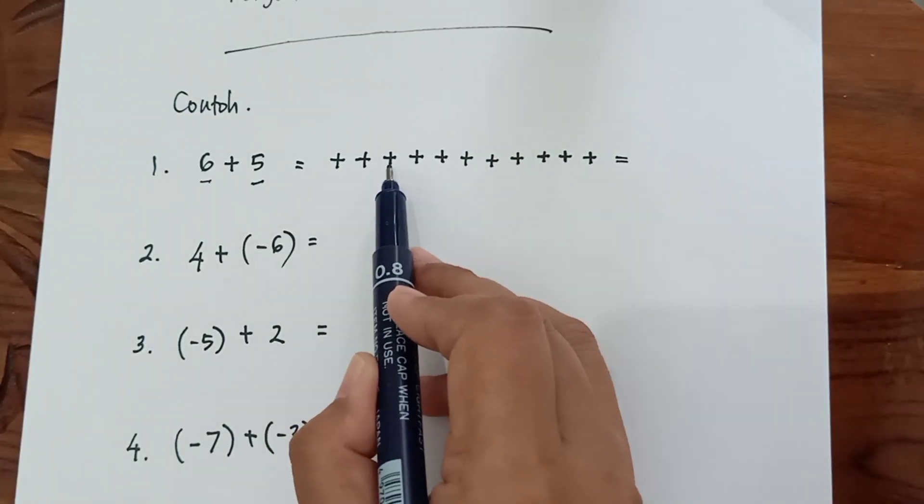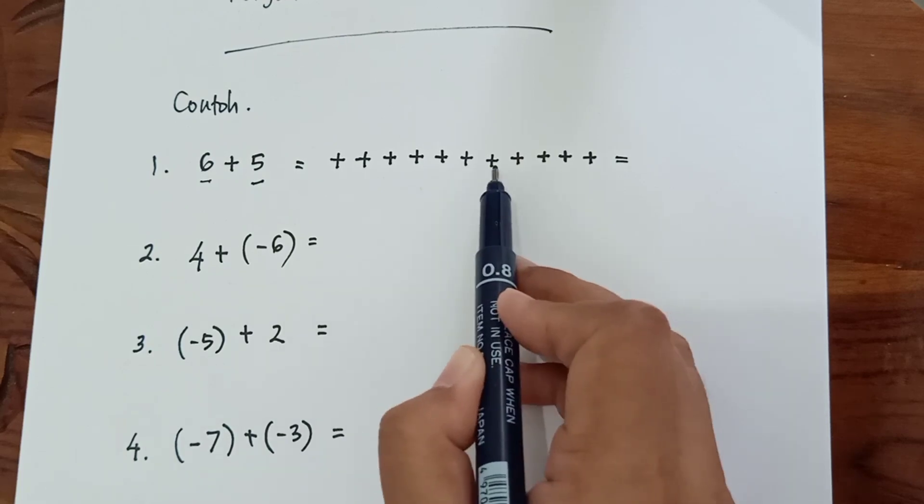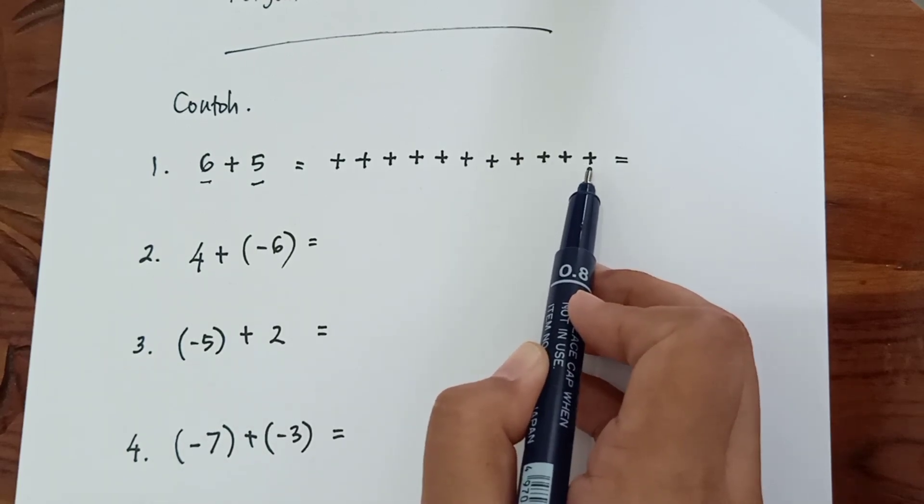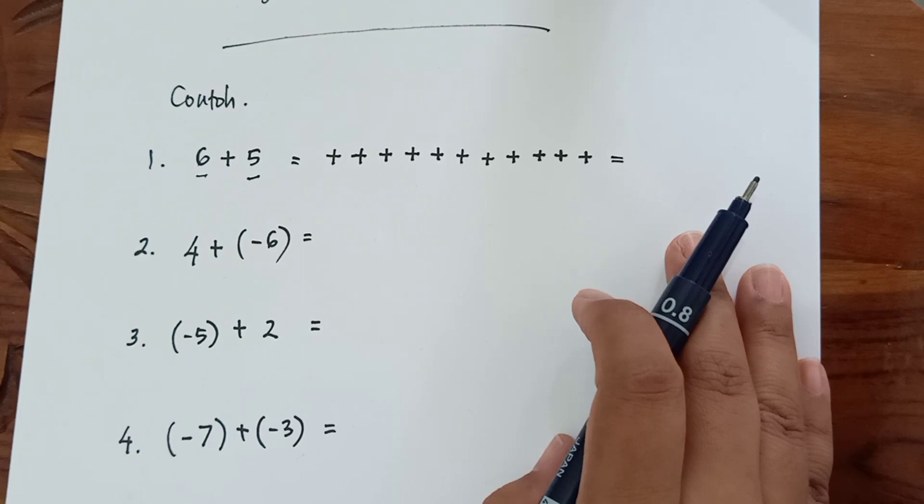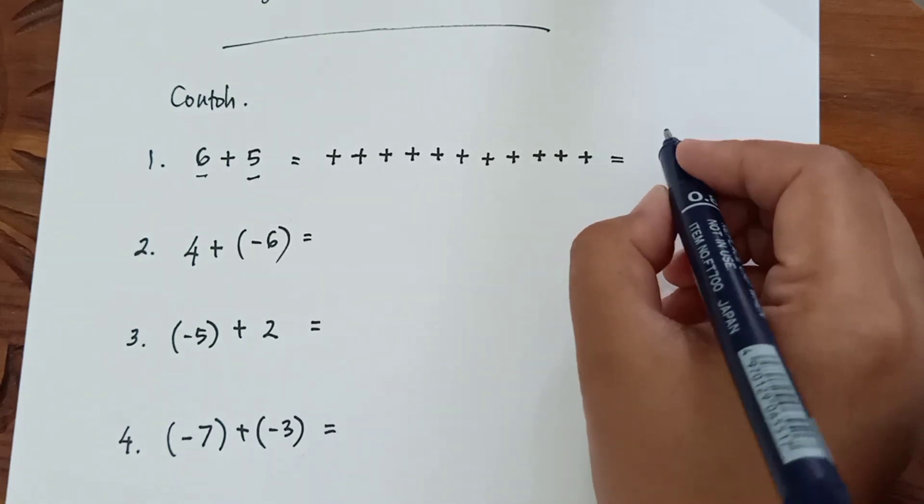adalah 1, 2, 3, 4, 5, 6, 7, 8, 9, 10, 11. Karena bilangan positif, maka positifnya tidak perlu ditulis. Sama dengan 11.